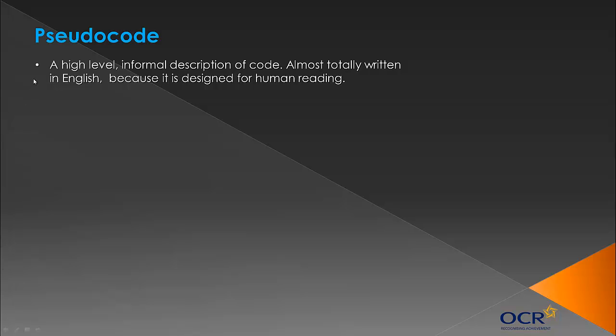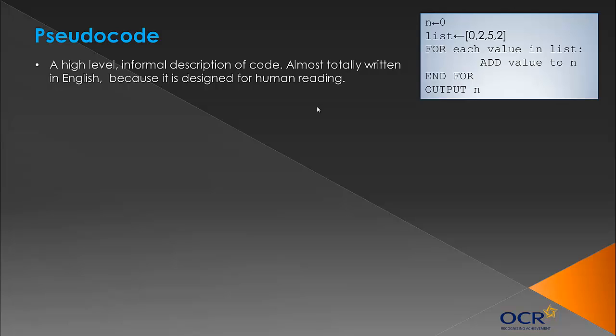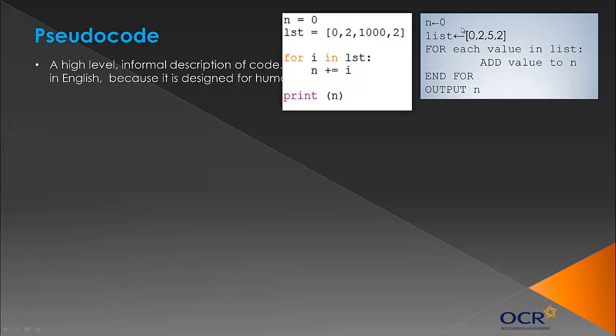Pseudocode is basically a high-level informal description of code. When we talk about high-level programming languages, we'll look at this in the next video. But what it means is mainly written English because it's designed for humans to read. A computer will never run pseudocode because it just doesn't make sense. This is an example of pseudocode. What this code is doing is basically adding up all the values in the list. If we actually did this in Python, if this was our plan and we put it into code, it would look like this.